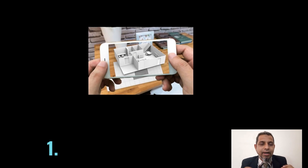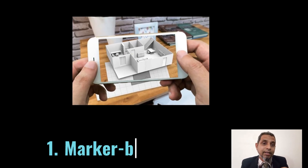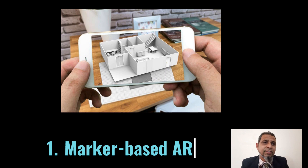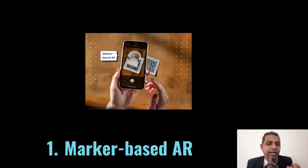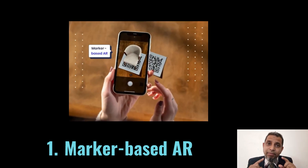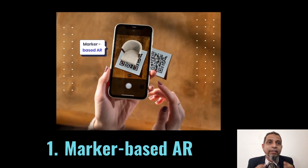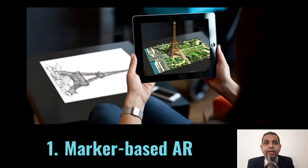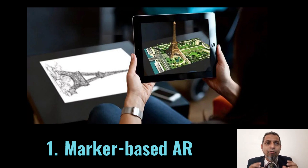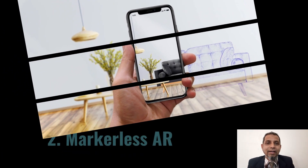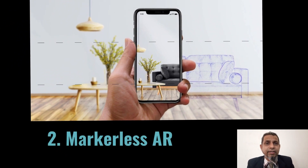Number one — marker-based AR. Marker-based AR works by scanning a marker, which triggers an augmented experience — whether an object, text, video, or animation — to appear on the device. It usually requires software in the form of an app, which enables users to scan markers from their device using its camera feed.